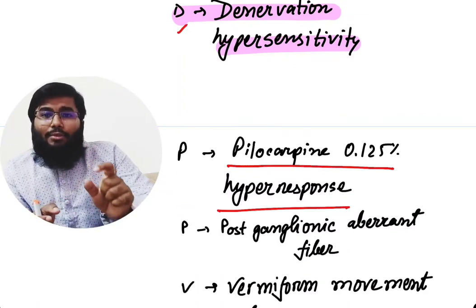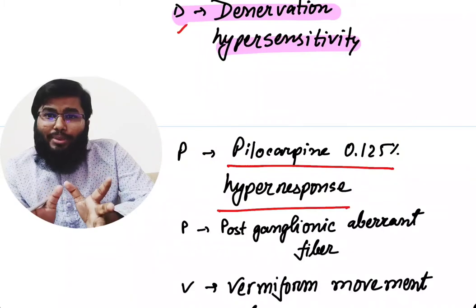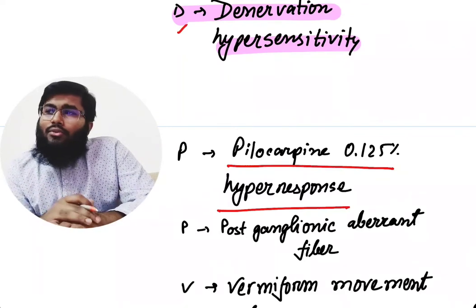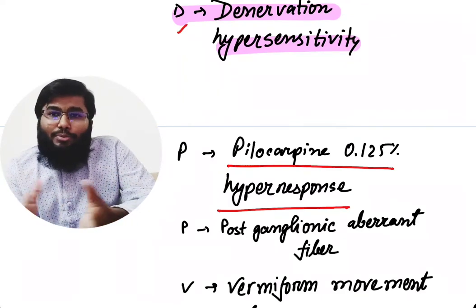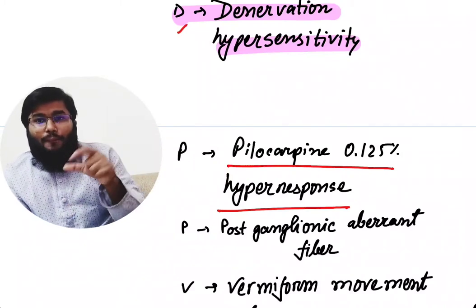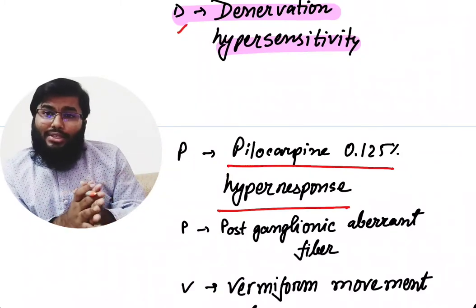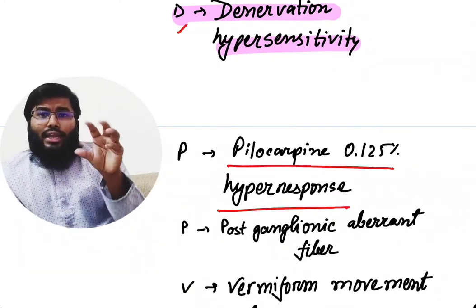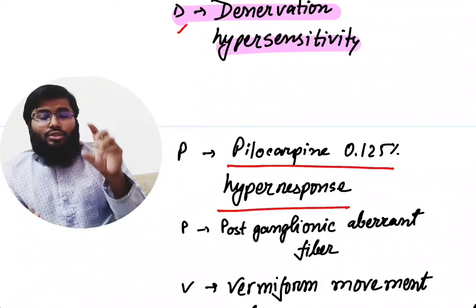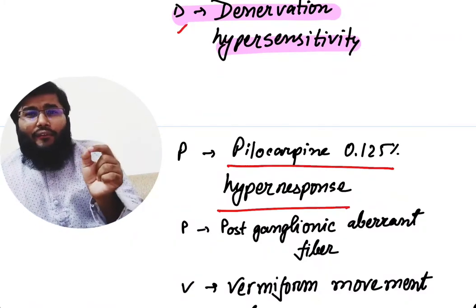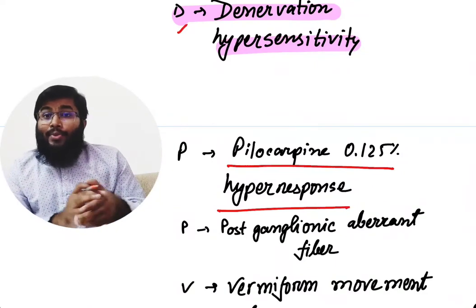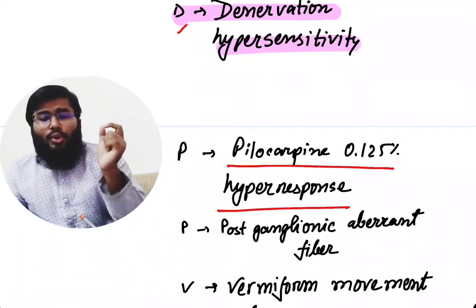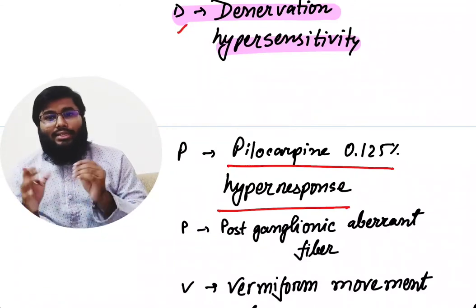This denervation hypersensitivity causes the pilocarpine hyper-response. If we give pilocarpine at about 0.05 to 0.1–0.5% — a very low concentration — this normally does not cause a response or change the shape of the pupil. But due to pilocarpine hypersensitivity from denervation hypersensitivity, when we give pilocarpine it will cause the eyes to be more constricted — even a very dilute form of pilocarpine will cause dramatic constriction.